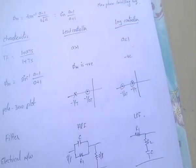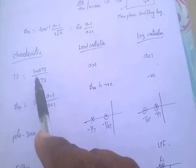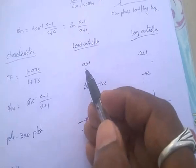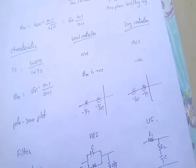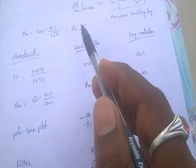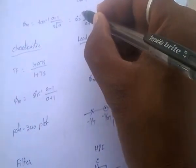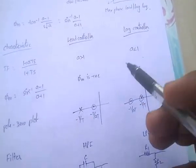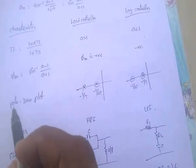The characteristics of lead and lag controllers: if the transfer function is in the form (1 + ATs) / (1 + Ts), for a lead controller the value of A is greater than 1, and for a lag controller the value of A is less than 1 — very, very important. The φ_M value is positive for the lead controller and negative for the lag controller.